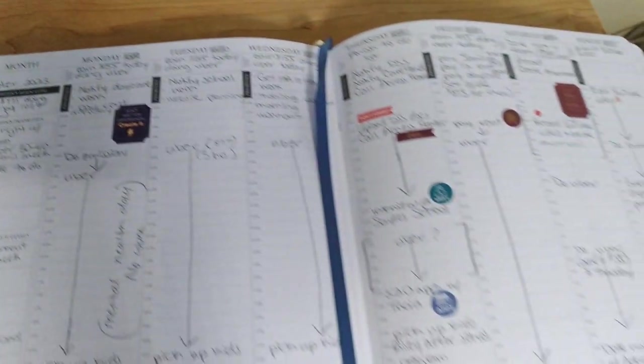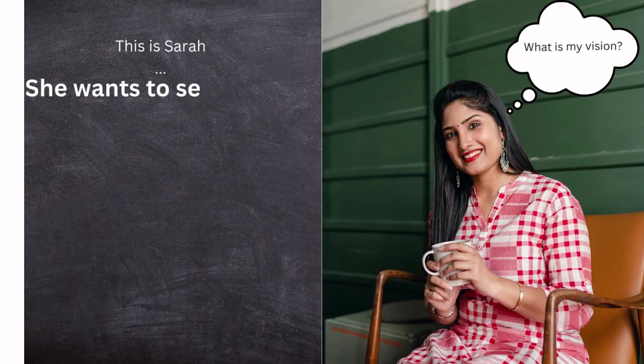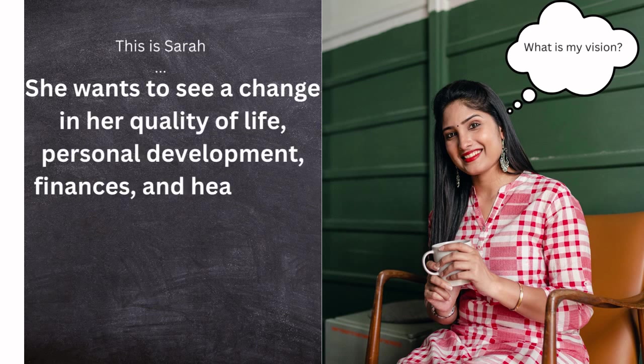Our avatar Sarah would have a weekly routine that encompasses her goals that she has written for her life categories. Each week, she needs to have one action step that she wants to achieve from her life categories that would bring her closer to achieving her goals.